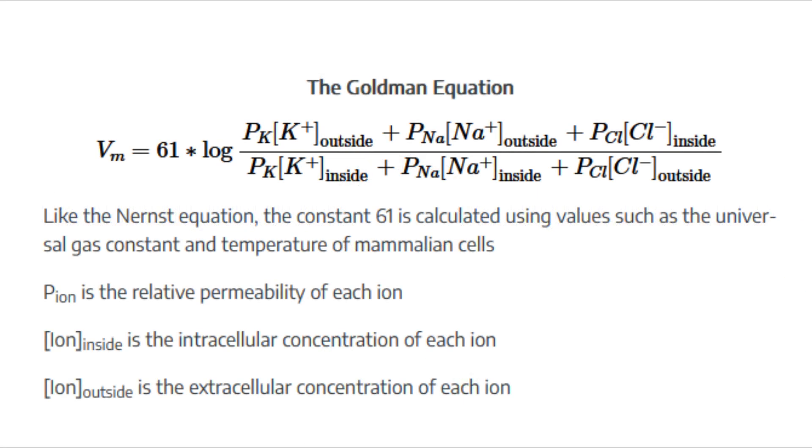Let's talk a little bit about the Goldman equation. While the Nernst equation calculates the equilibrium potential for one ion, the Goldman equation factors in multiple ions and their relative permeabilities. The P-ion is the membrane's permeability to that ion at rest. The ion inside and outside is the ion concentration on each side of the membrane. And 61 is the constant which reflects the temperature and other physical constraints in mammalian systems.